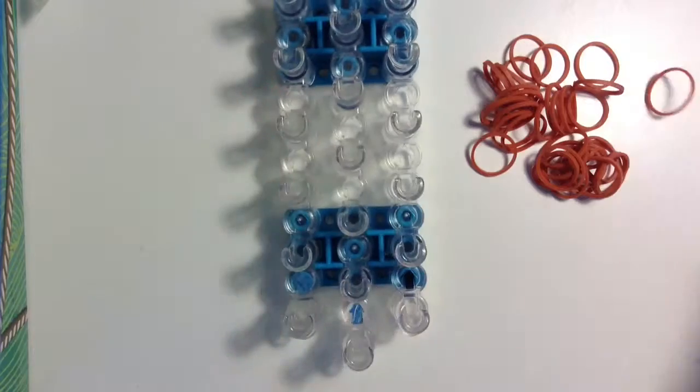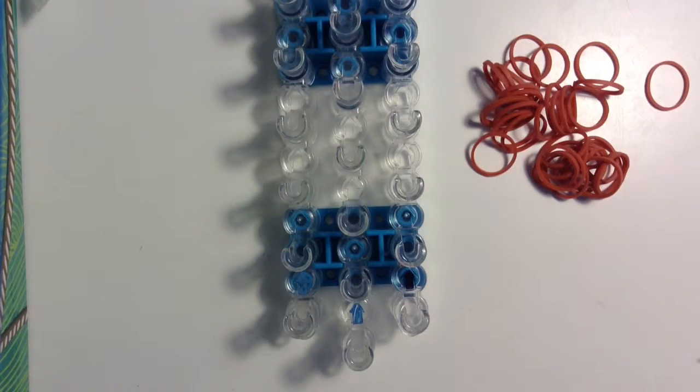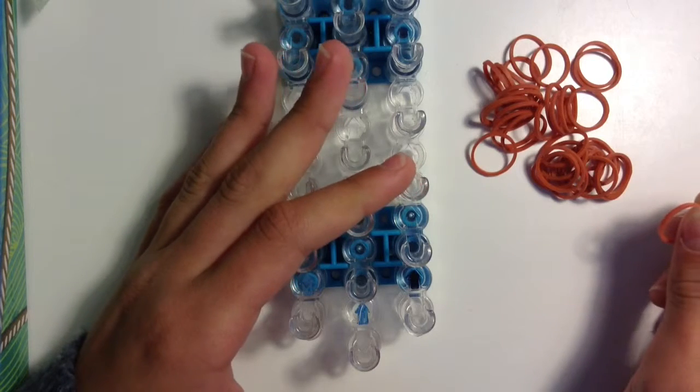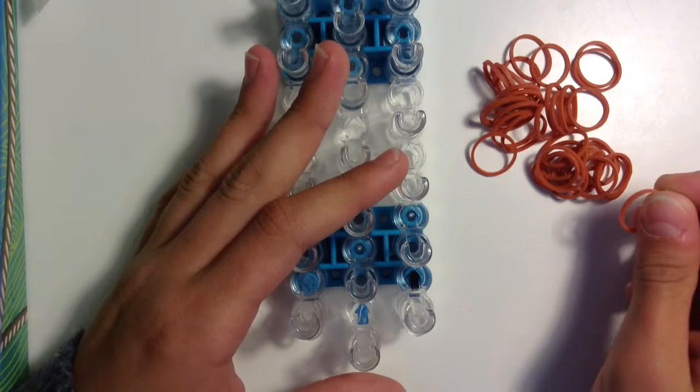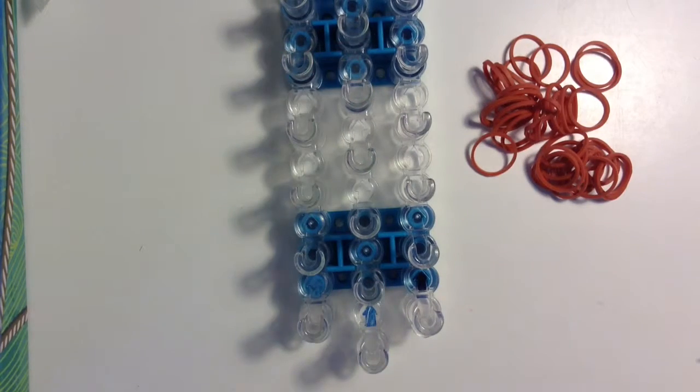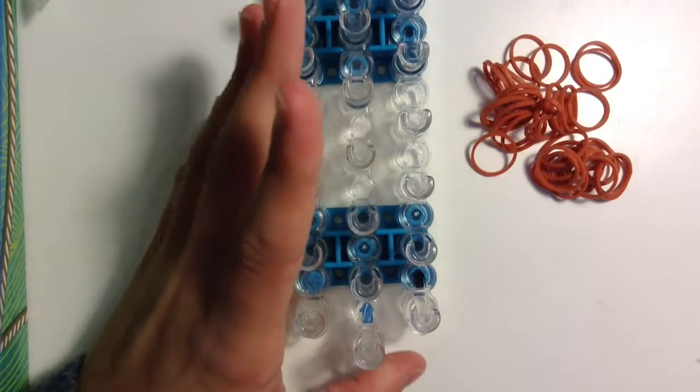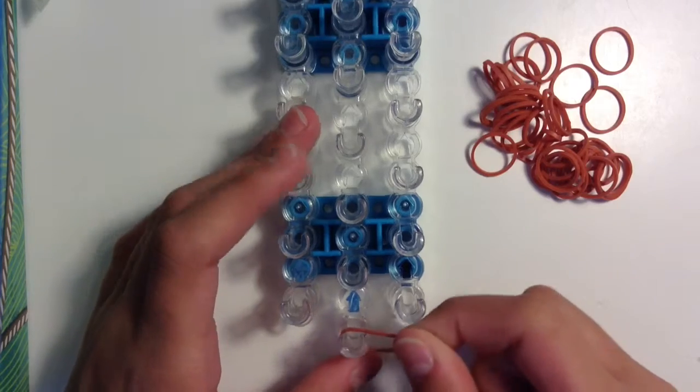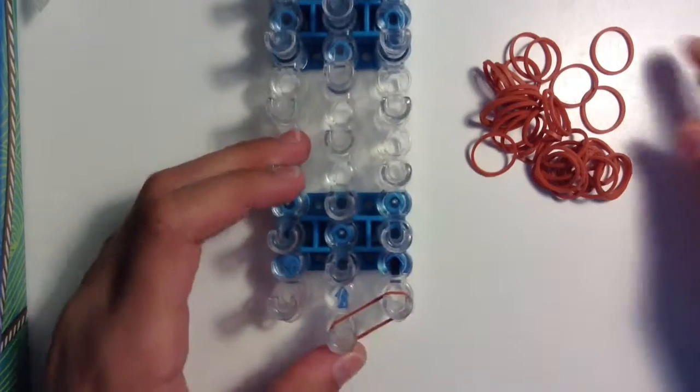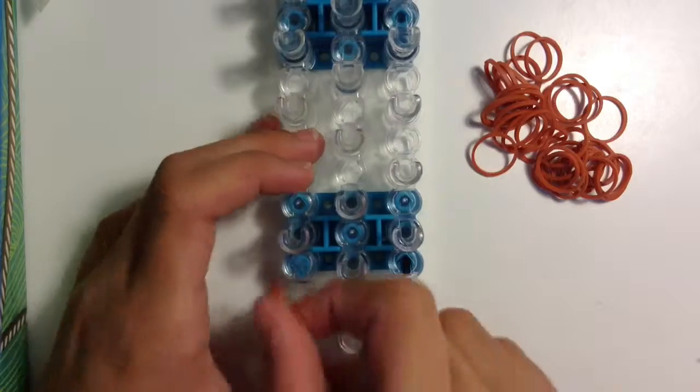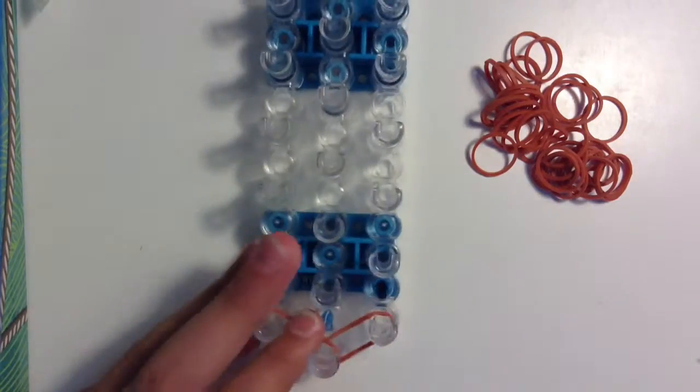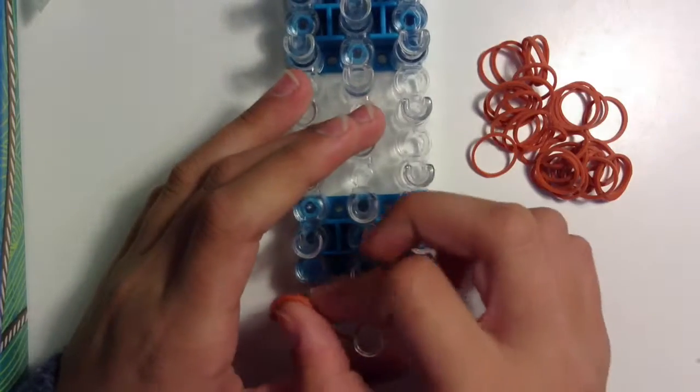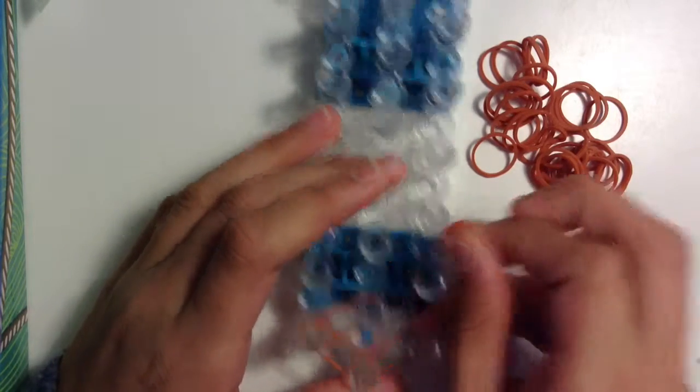To start we are going to start the border. So what you are going to do is I am going to get my caramel bands. You are going to start from the middle pin and go up to the right and left. So I am going to go up to the left. And then now we are going to go up one side. You are going to go from this left pin and go to the middle.